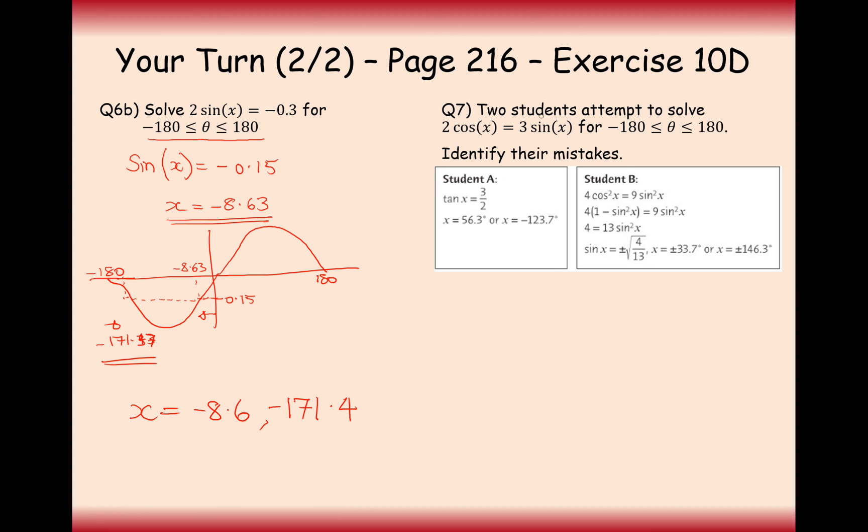Let's have a go at question 7 as well. So two students attempt to solve 2 cos x equals 3 sin x for minus 180 to 180 degrees. Identify their mistake. So the first thing this student does here is creates a tan x equals 3 over 2. So they've obviously divided by cos and divided by the 3. They've got this the other way around. And the student A has got 3 over 2 rather than 2 over 3.